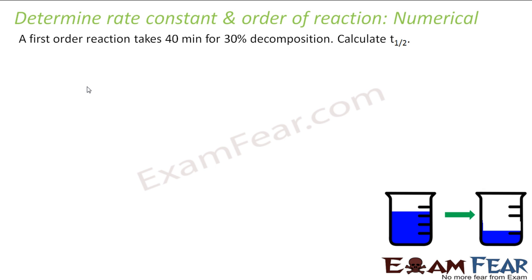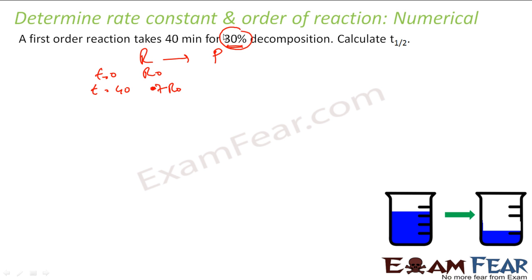The next problem: a first-order reaction takes 40 minutes for 30% decomposition. Find T½. The reactant converts to product. At T = 0, the initial concentration is R₀. At T = 40 minutes, 30% has decomposed, so 70% remains — that means the final concentration is 0.7 R₀.